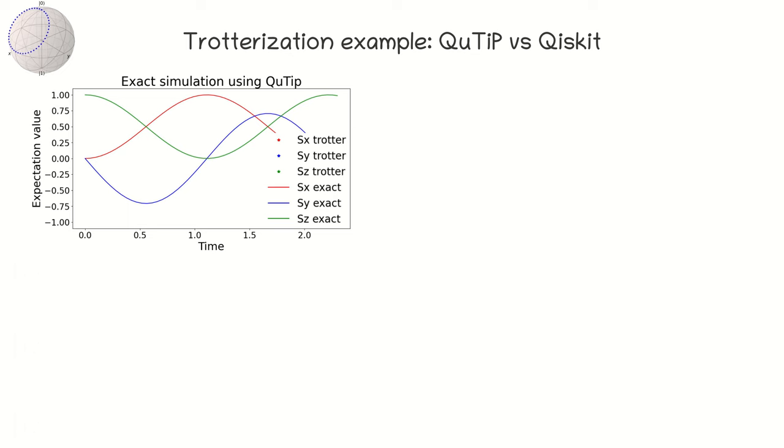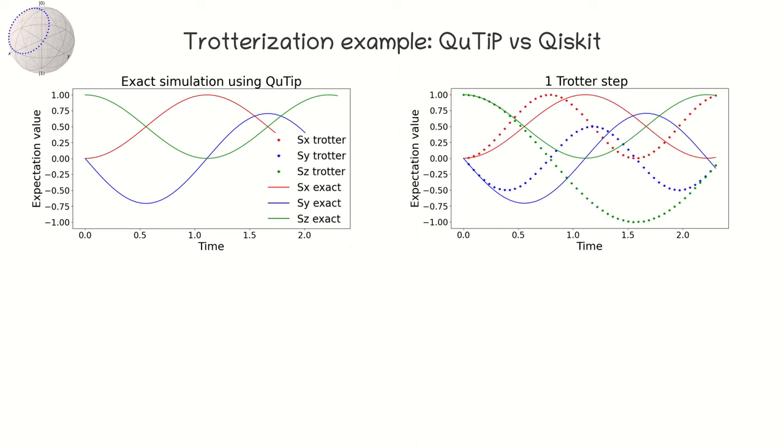Then, we perform a Hamiltonian simulation for different numbers of trotter steps using QuTiP. Here is the figure for one trotter step. The solid lines show the exact evolution, and the stars show the time periods for which trotterization was used. A quantum circuit in this case consists of only two rotation gates. To calculate the state of the qubit at each time point, we must every time execute the quantum circuit with different rotation angles. One can notice that one-step trotterization works well only for a very short time interval.